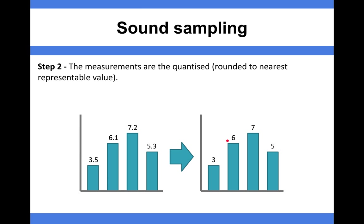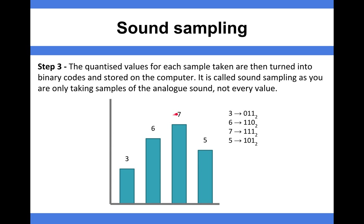So the units of measurements are quantized, they're rounded to the nearest representable sample value, and then those values are turned into binary codes which are stored on the computer. So using our three bit depth sample here we can see that three's been converted into its binary form of 0, 1, 1, 6 the corresponding, 7 and then the 5. So only the samples that approximate are quantized are then recorded into the actual audio file that we've got.